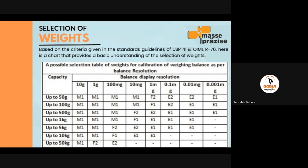There are different guidelines. USP 41 has its own guidelines. Some recommendations have been made by USP, and there are different guidelines such as OIML R76, which is a primary guideline for manufacturers of weighing balances and calibration laboratories of weighing balances. We have combined different guidelines and arrived at a table. For a given maximum capacity of weighing balance with different balance resolutions, the selection of weights may change.